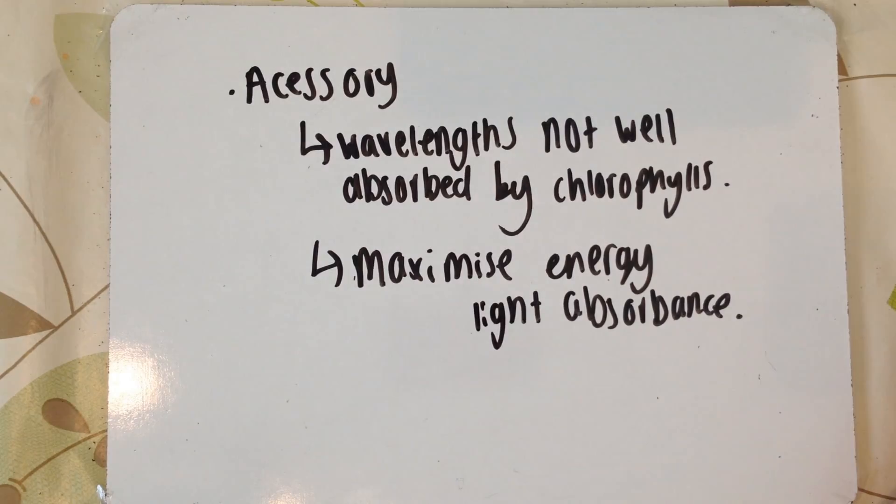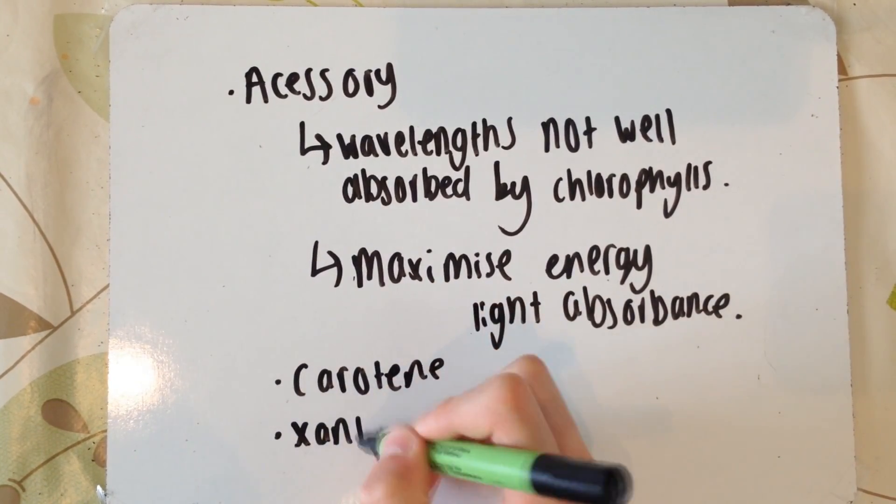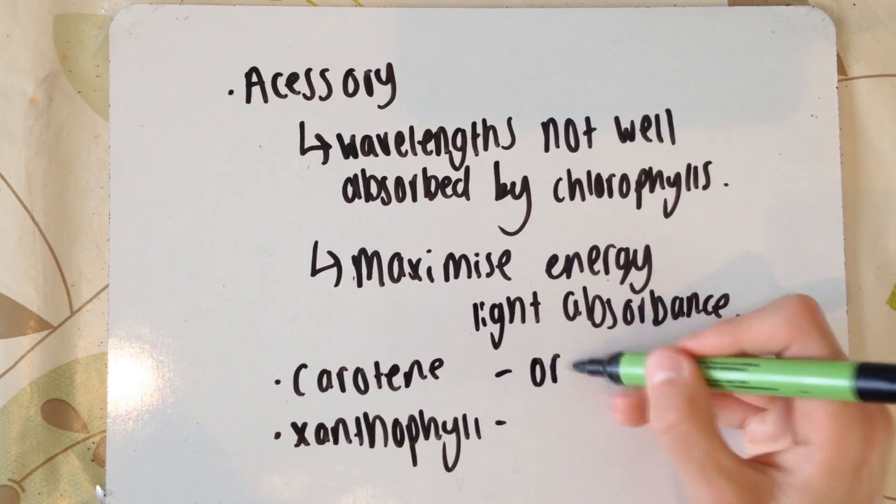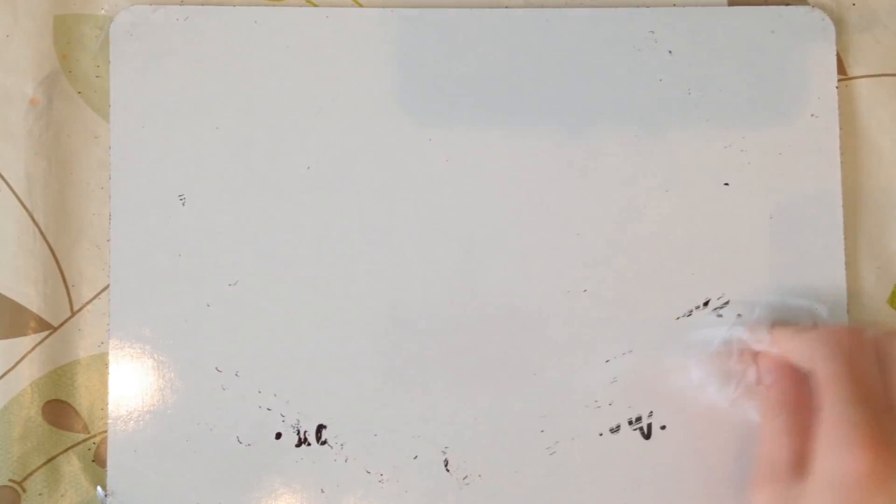The two main accessory pigments we need to know about are called carotene and xanthophyll, and these absorb the orange and yellow colors, the wavelengths of light respectively.